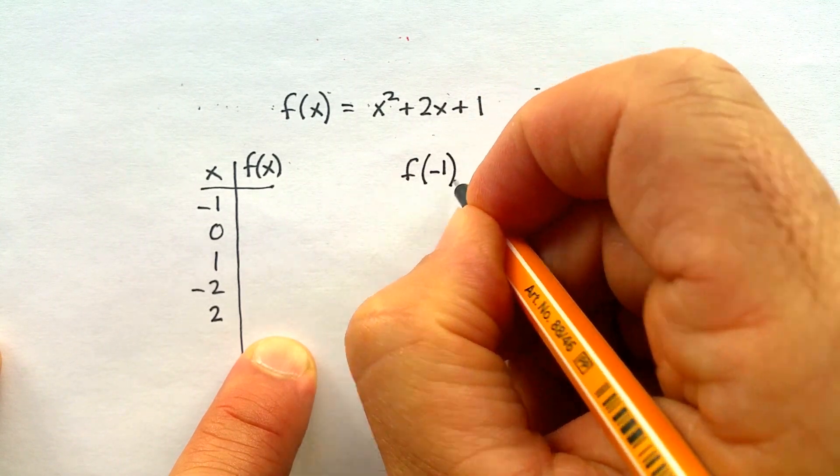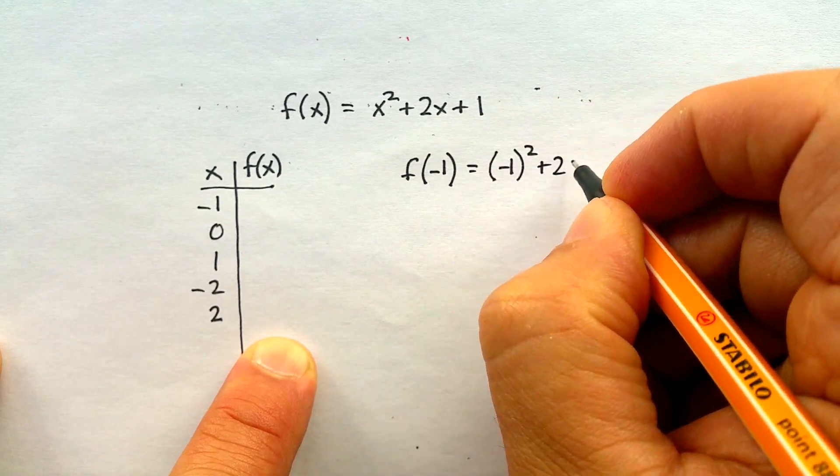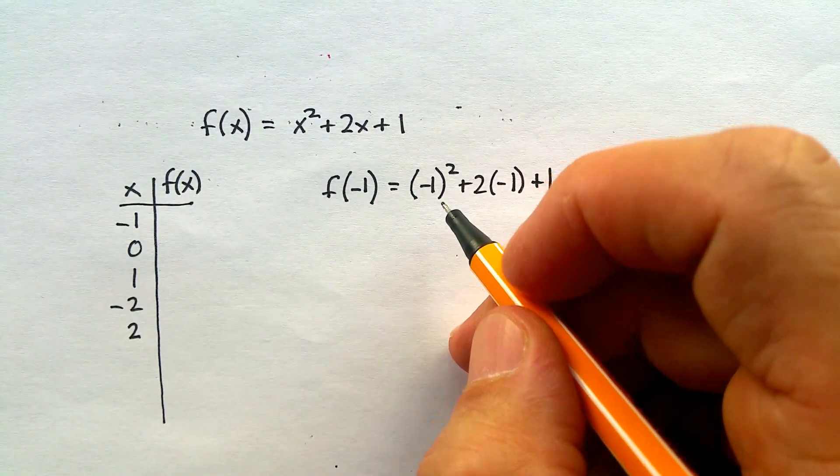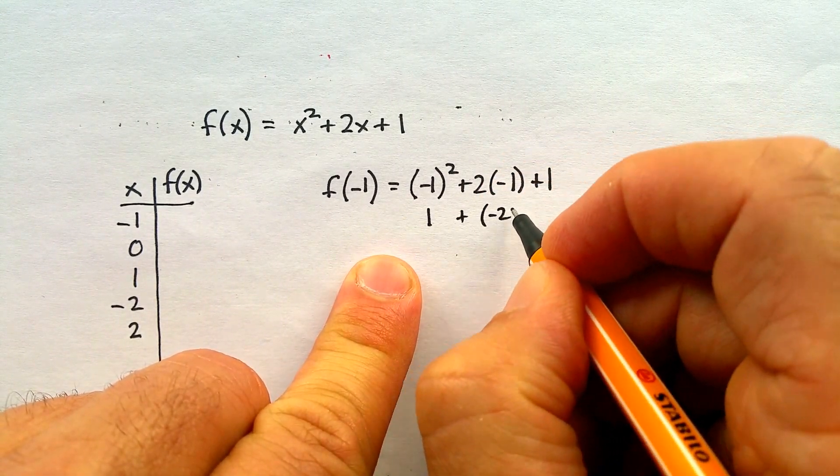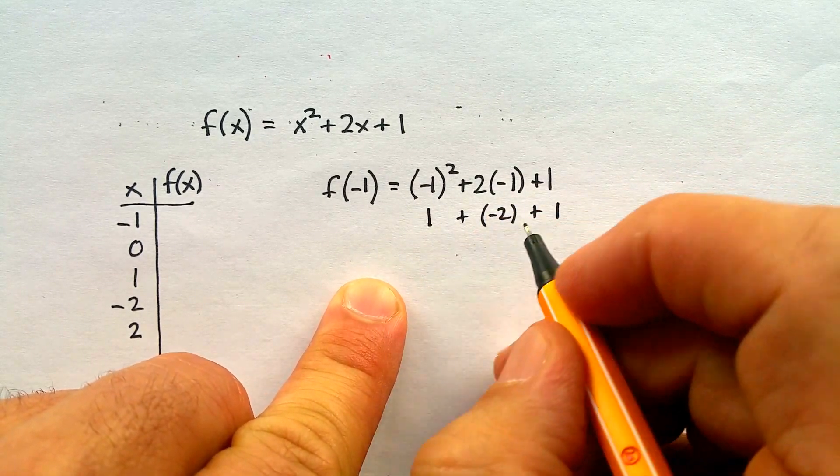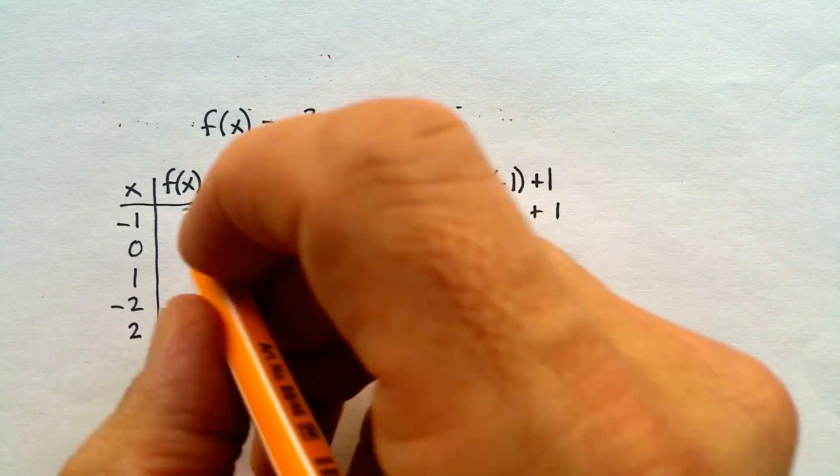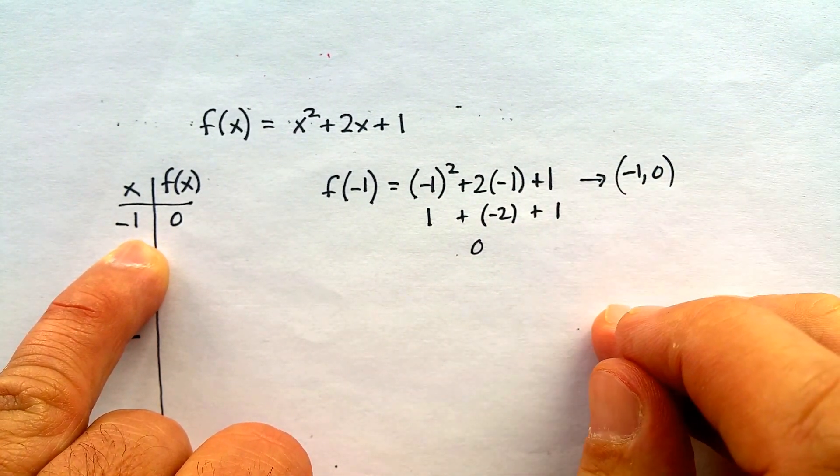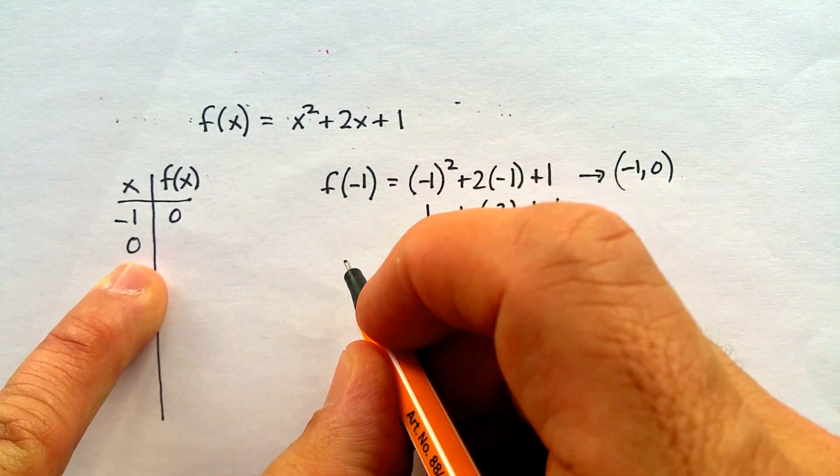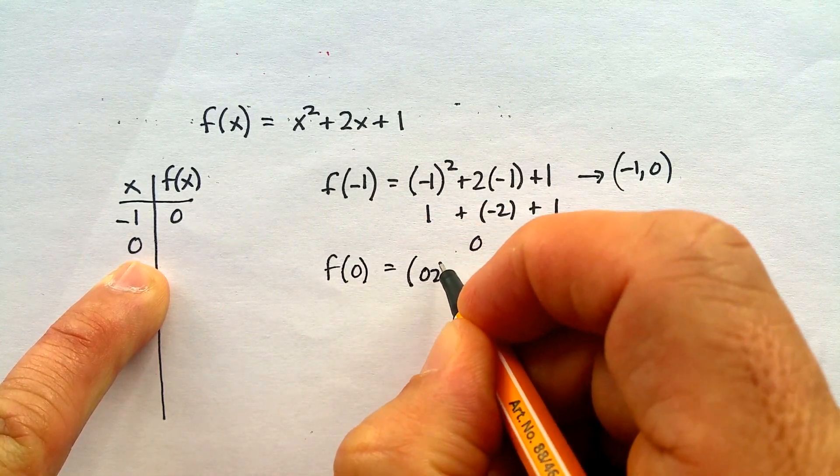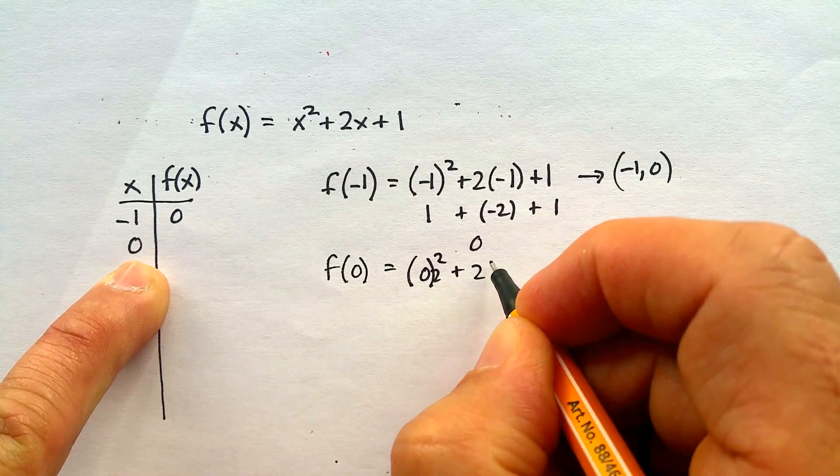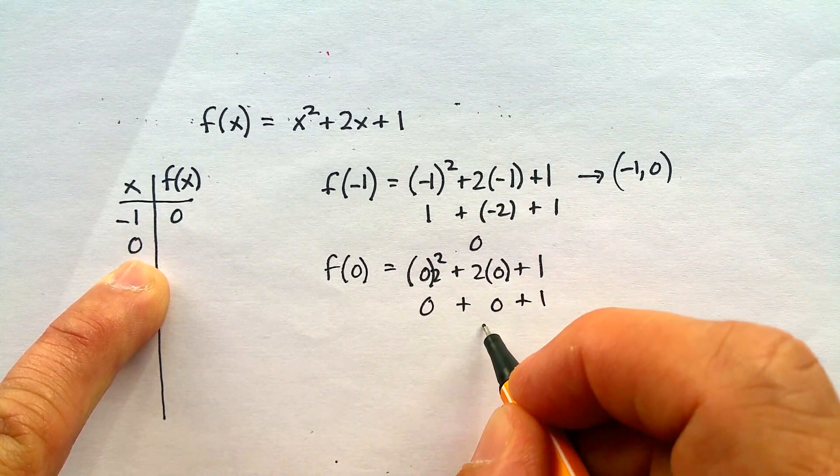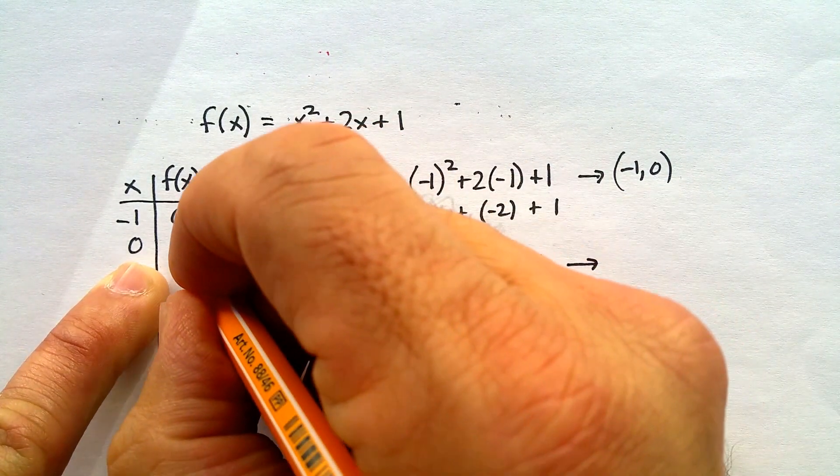Now, let's start. f of negative 1 is negative 1 squared, 2 times negative 1, plus 1. What's my output going to be? Let's calculate. Negative 1 squared is 1. 2 times negative 1 is negative 2, plus 1. That's going to give me, adding all that up, 0. My output, therefore, is 0. My coordinates are negative 1, 0. Let's keep going. Let's make our input 0. f of 0 is equal to 0 squared plus 2 times 0, plus 1. That's going to give me 0 plus 0, plus 1. My output is going to be 1. And my coordinate, therefore, is 0, 1.